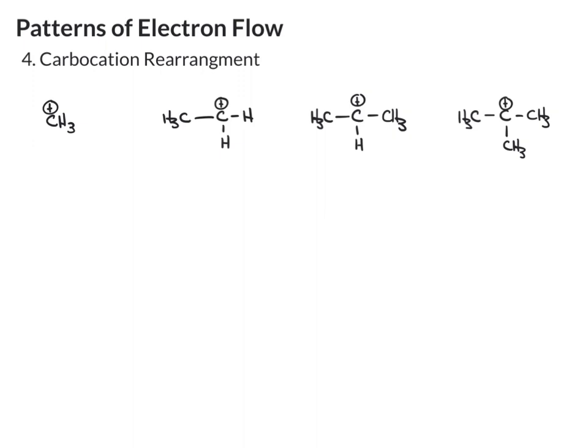Here I've drawn a series of carbocations. The first one is just a methyl group, CH3, with a cation — we call that a methylcation. For the others, if you look at the carbocation carbon and then look at how many other carbon groups are bonded to it, you can classify it like we've classified other molecules.